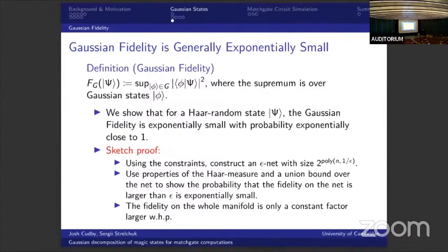So what can we do now that we have an explicit and small description of Gaussian states? One thing we can prove is that the Gaussian fidelity is generally exponentially small. The Gaussian fidelity is simply the maximum overlap of the state you care about with any Gaussian state phi. For a Haar random state, we can show that the probability of having non-negligible overlap is actually exponentially small. To sketch the proof: we use the independent constraints to construct an epsilon net, use properties of the Haar measure, and take a union bound over that net to show that with high probability the fidelity is exponentially small. The fidelity of any general Gaussian state not on the net is only a constant factor larger with high probability.